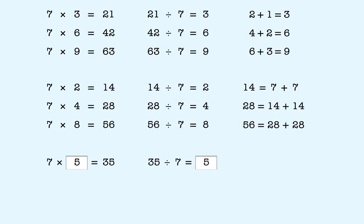Now the last one. We have to remember that 7 times 7 is 49, so the missing factor is 7. That means 49 divided by 7 is 7.